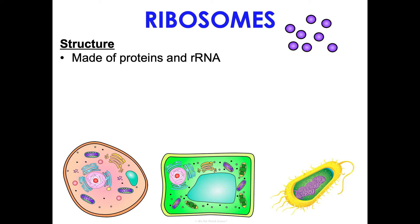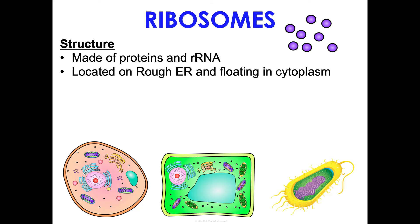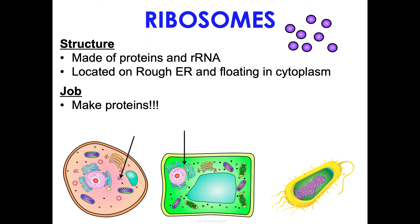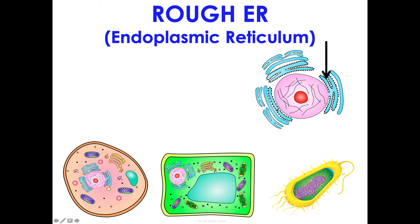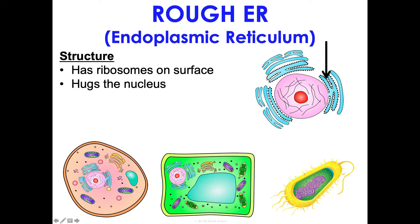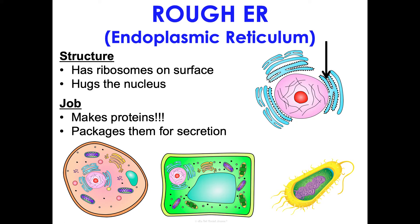Ribosomes are made of proteins and rRNA produced by the nucleolus. They are found in two locations: on the rough endoplasmic reticulum and floating in the cytoplasm. Ribosomes make proteins, and proteins run everything — we'll talk about them all year. The rough endoplasmic reticulum hugs the nucleus and is covered with ribosomes, which is why it looks rough. It makes proteins, packages them, and tags them for delivery, helping fold proteins through the four levels of protein structure.